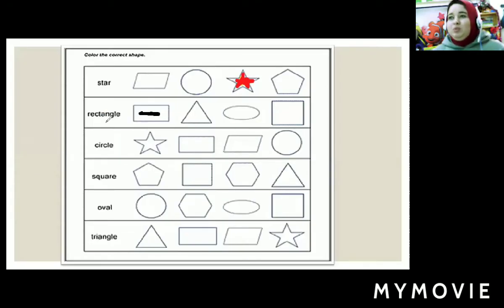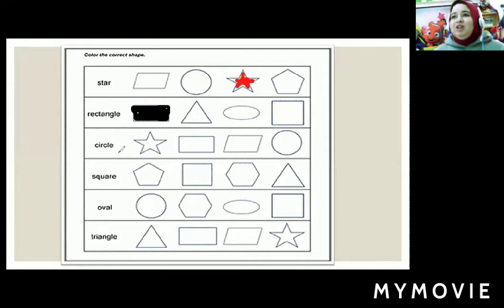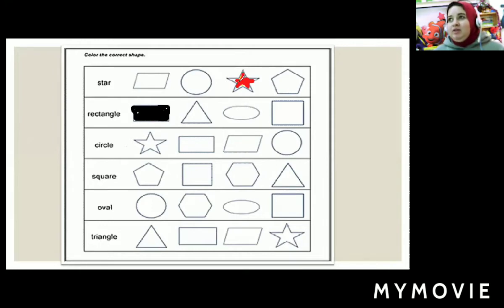And what's this word? Rectangle. I will color it with the black color. And what's this word? Circle. Where's the circle shape here? This one is circle? No. This one? Yes. I will color it with the orange color.